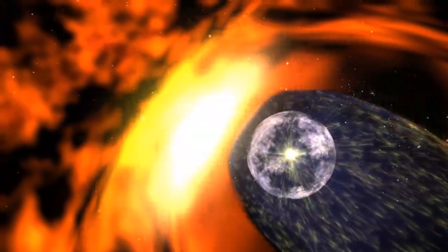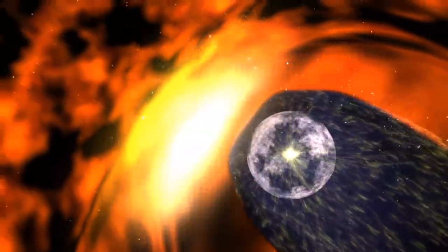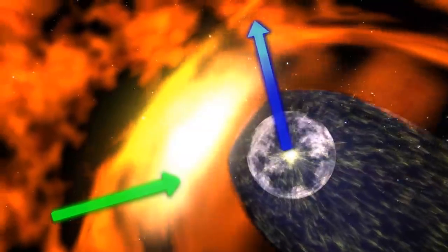Like a bicycle traveling in a crosswind, the wind that the solar system feels is actually a combination of the solar system's movement relative to the galaxy and the movement of the interstellar medium itself.